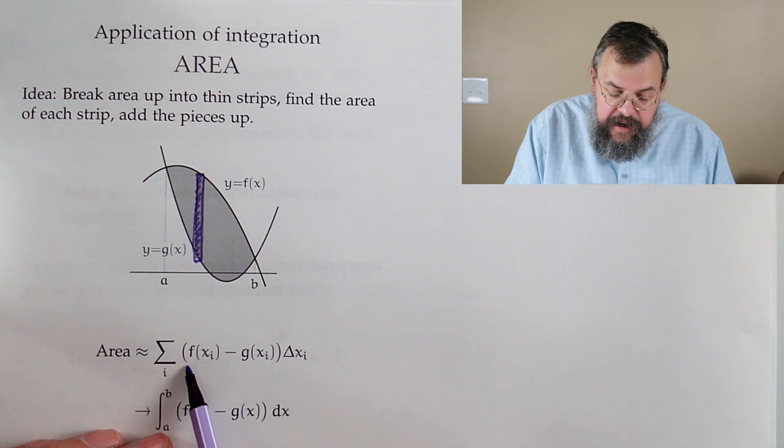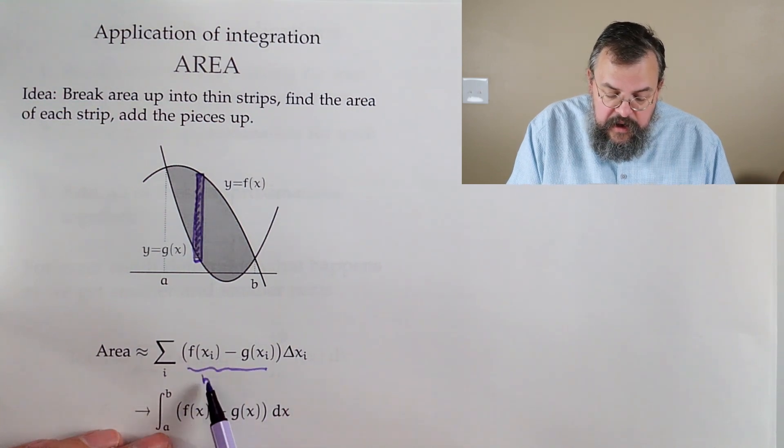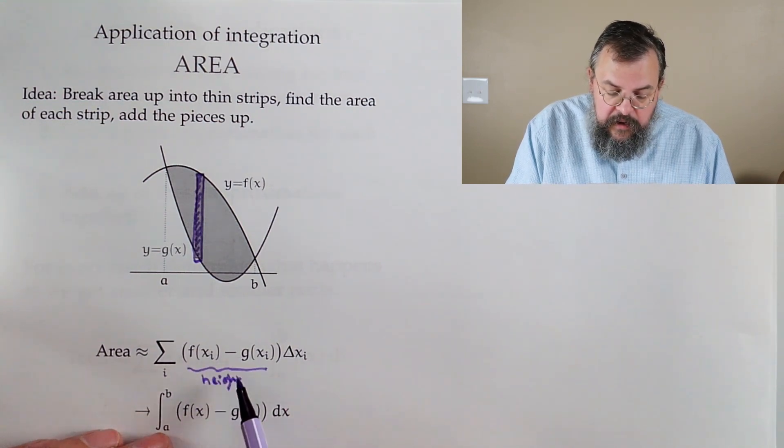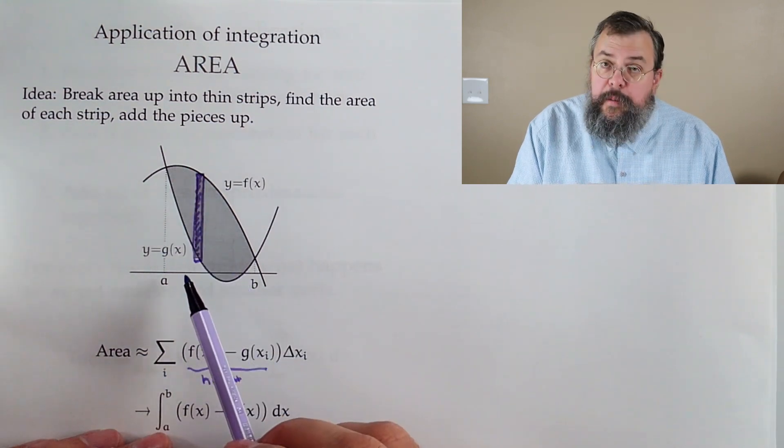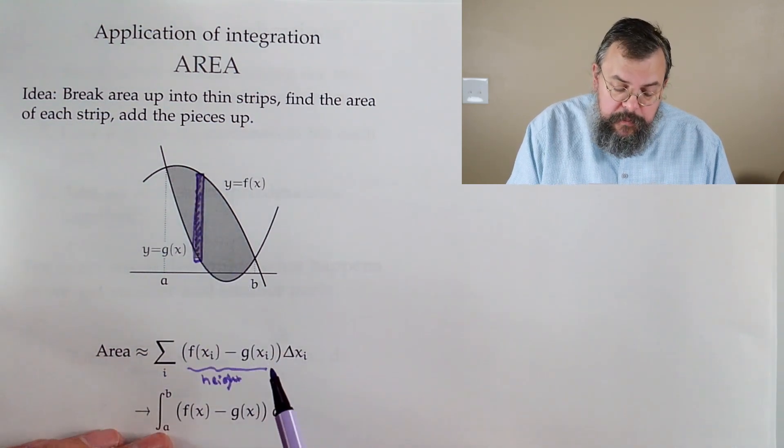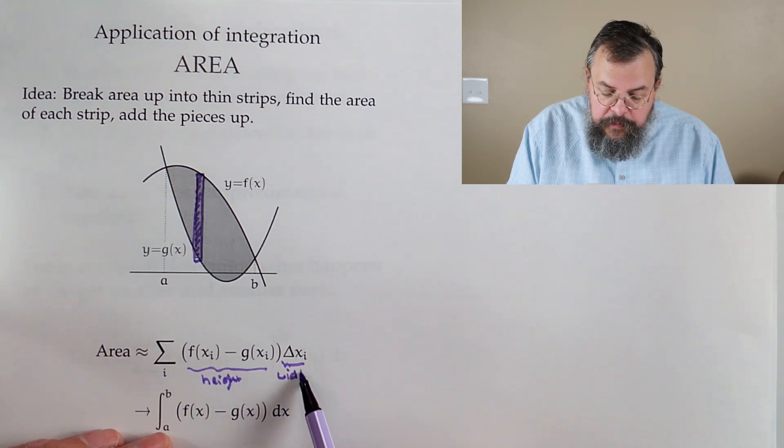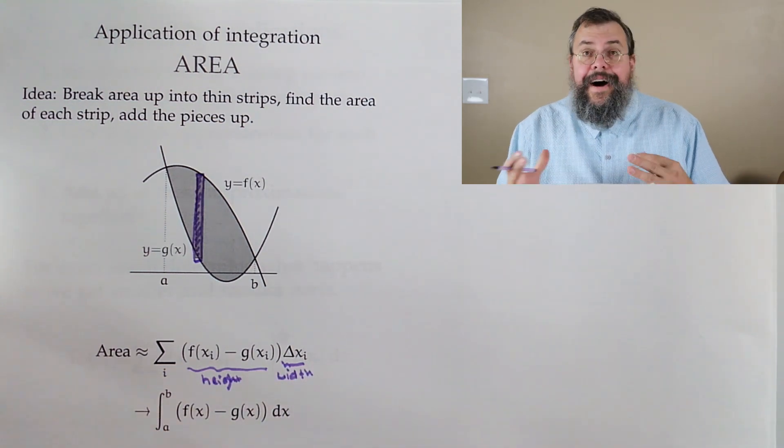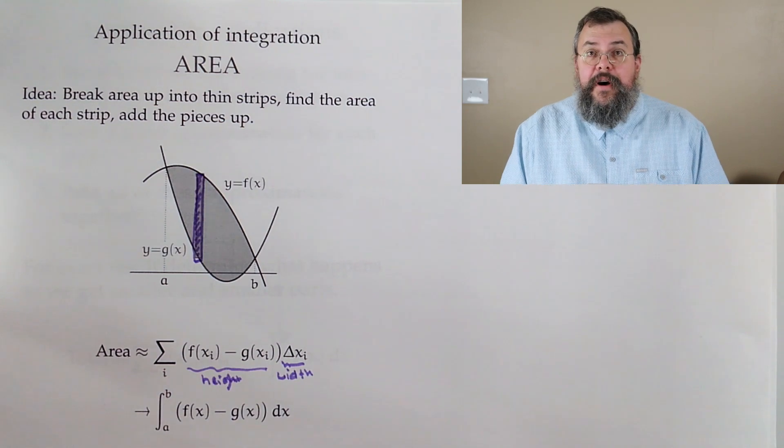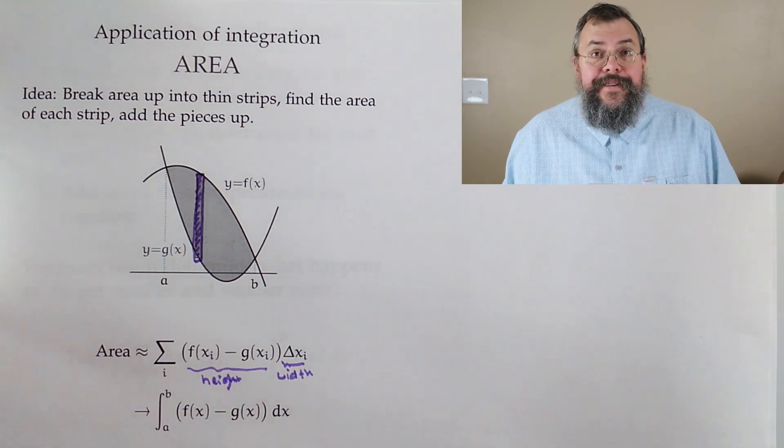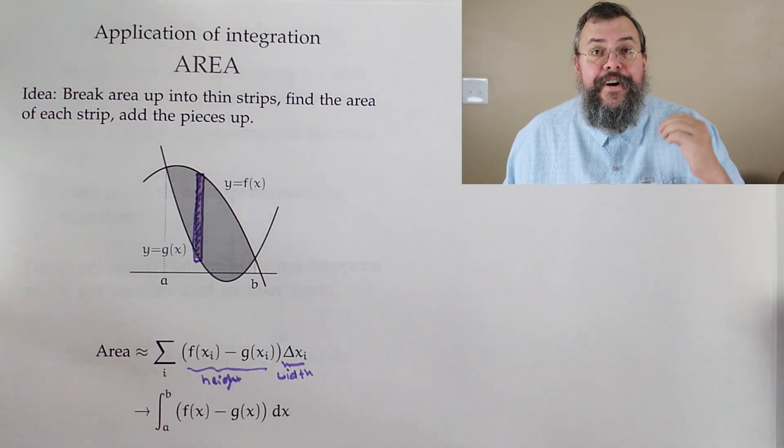What I do is, I say, let's look at the height, so here's our height, it's from the top curve to the bottom curve. And then we'll multiply it by our delta xi, which is our width. So now, I have a height and a width multiplying together, which means, what do I have? I have an area.